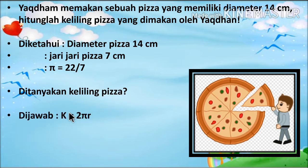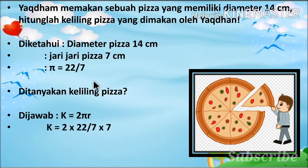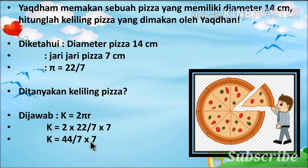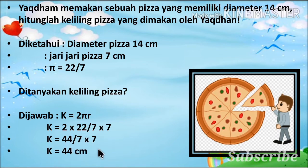Maka kita jawab: keliling rumusnya adalah 2 × π × r. Kita masukkan angka-angkanya ke dalam rumus: 2 × 22/7 × 7. Di sini 22/7 adalah π dan 7 adalah r. Kita hitung: 2 × 22 = 44, kemudian 44 × 7/7, nilai 7 dan 7 saling menghapus sehingga hasilnya adalah 44 cm. Jadi keliling pizza yang dimakan oleh Yakdan adalah 44 cm.